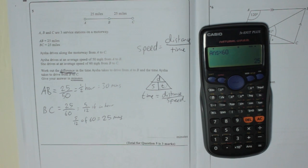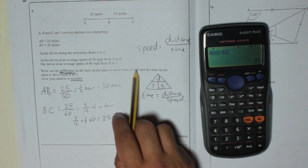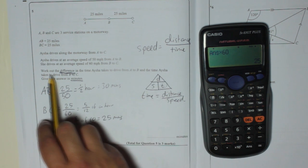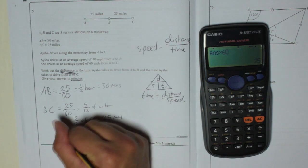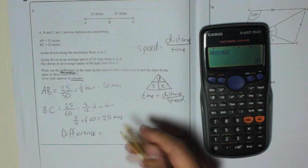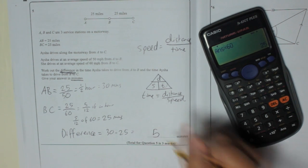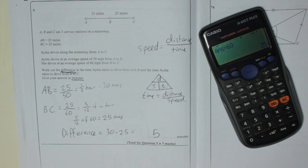Right, so remember it says work out the difference in time Aisha takes to drive from A to B and the time she takes to drive from B to C. So the difference is 30 take away 25 equals 5 minutes difference.